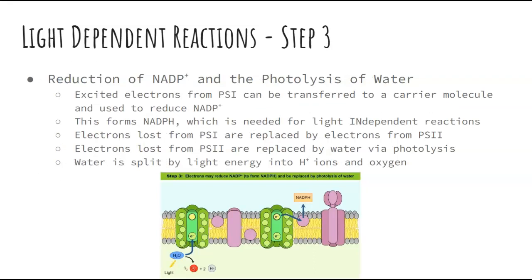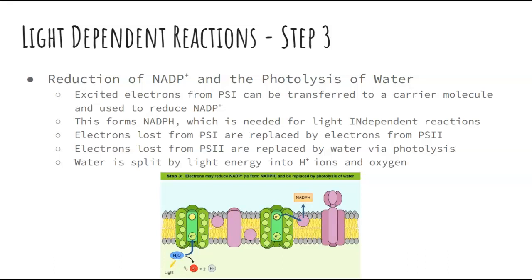Step three is the reduction of NADP+ and the photolysis of water. The excited electrons from PS1 are transferred to a carrier molecule and used to reduce NADP+ into NADPH. Different carriers, but same concept. This NADPH is needed for the light-independent reaction. The electrons lost from PS1 are replaced by electrons from PS2, and the electrons lost from PS2 are replaced by water via photolysis — the breakdown using light — which splits water into oxygen and hydrogen. Those electrons are then picked up by PS2.